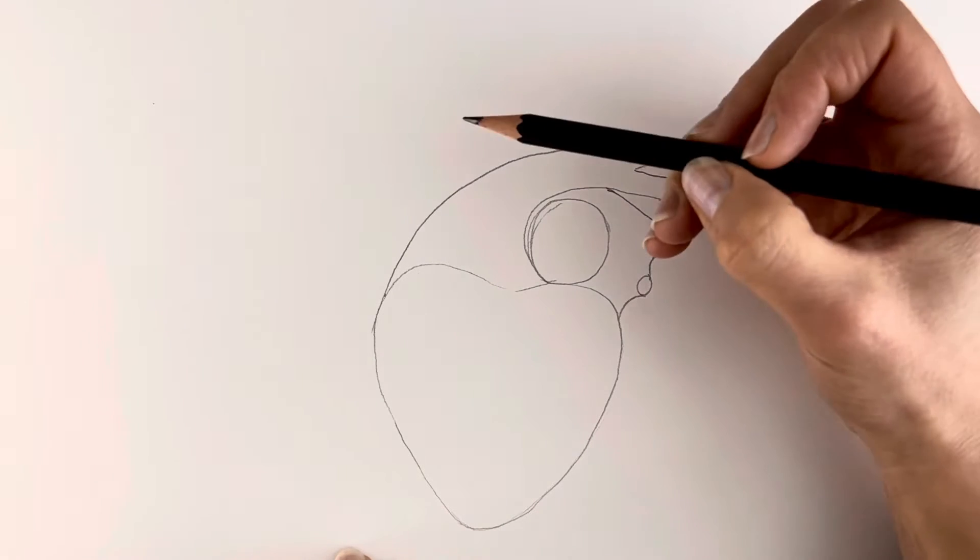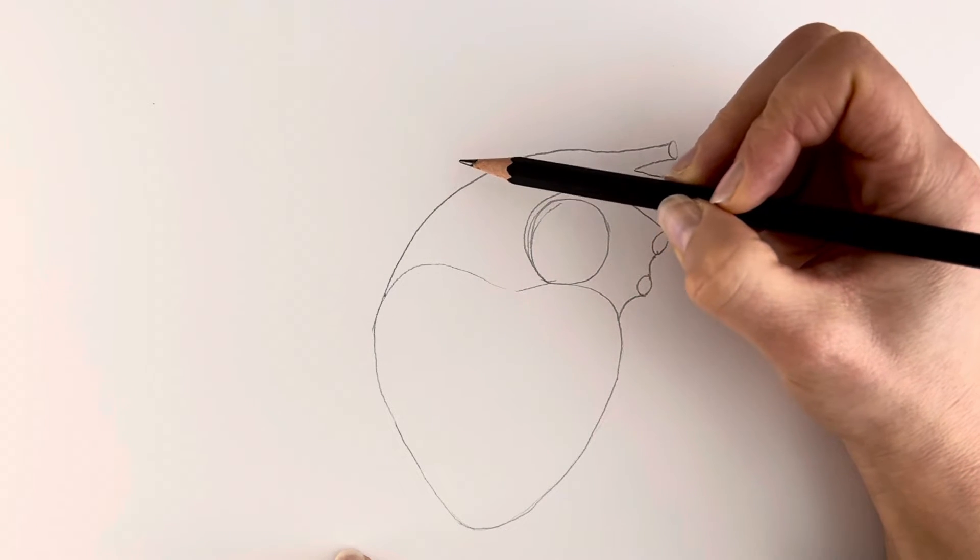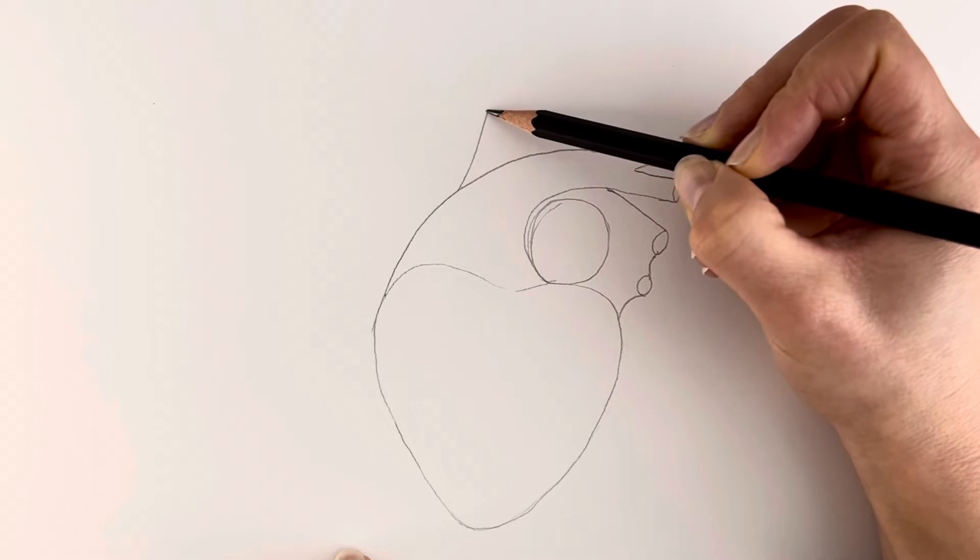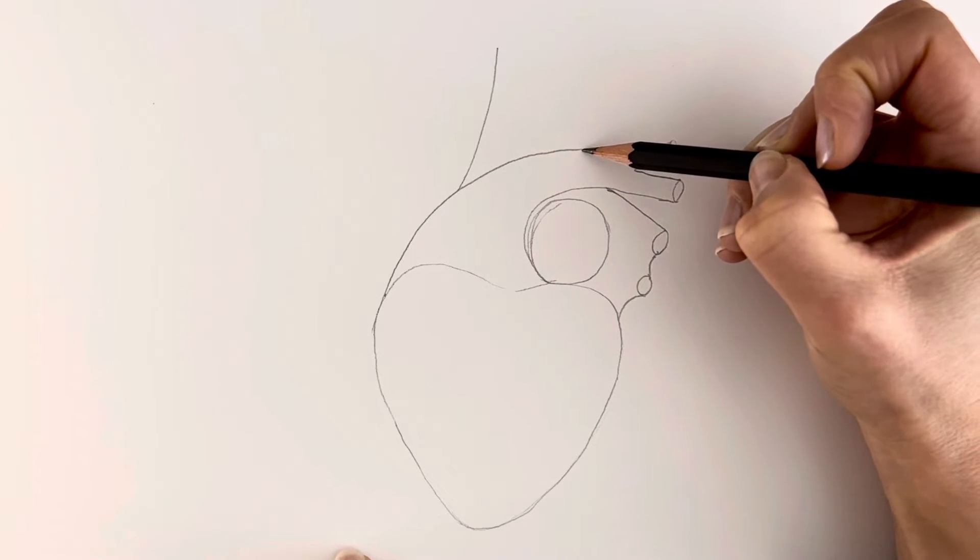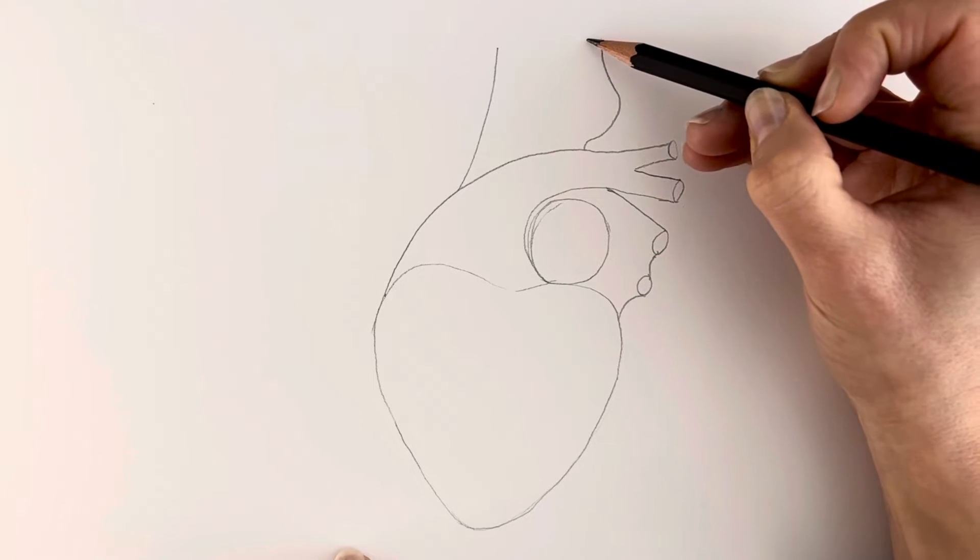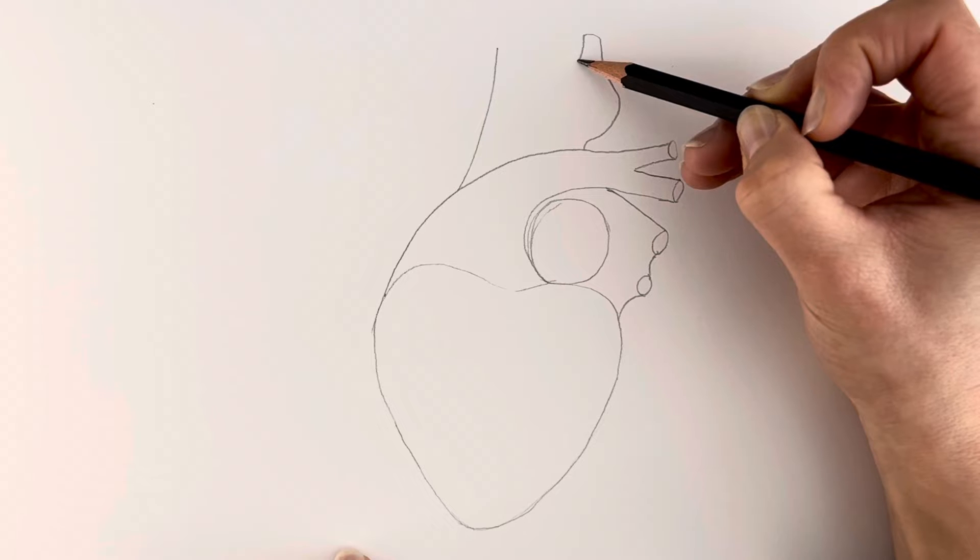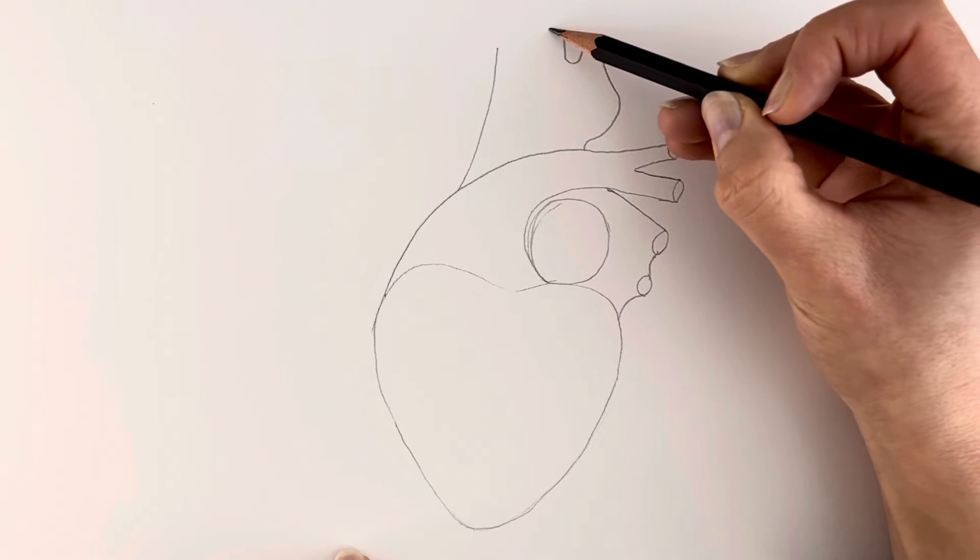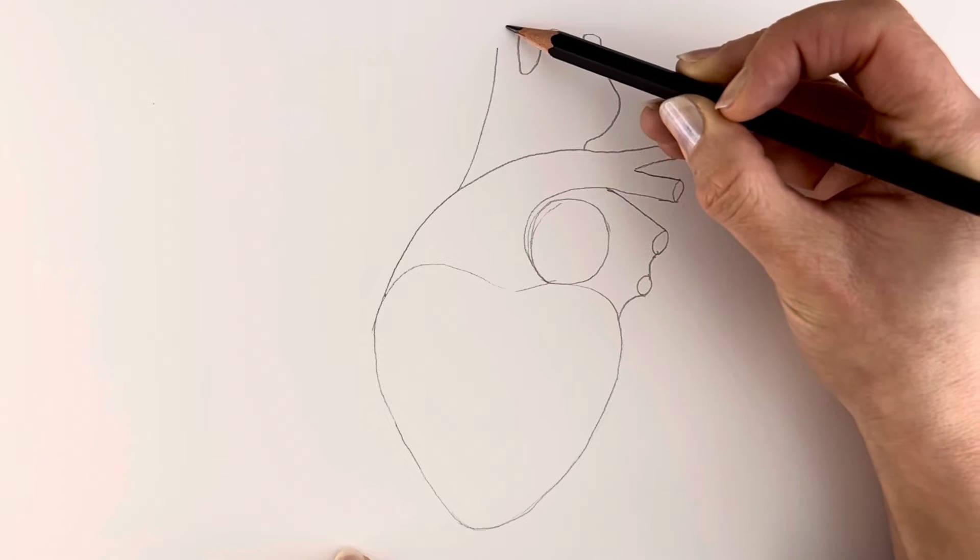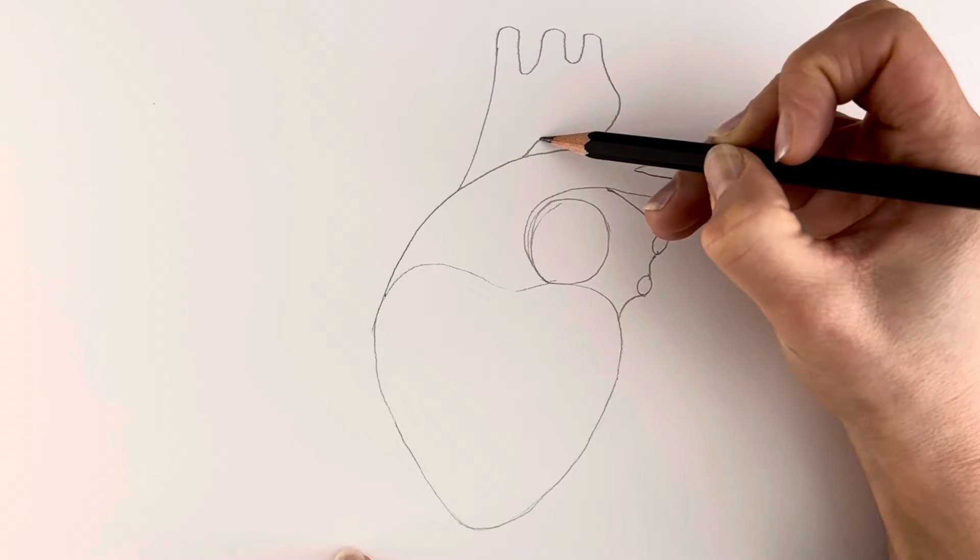Now we're going to be drawing the massive artery which is called the aorta. So this one goes up like this, goes round like this, and then we draw three tubes up the top. Little hole there.